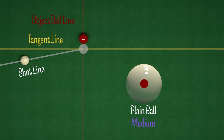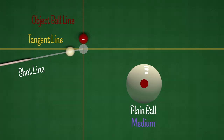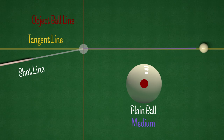The other thing that affects this is the angle of the cut. If we play this as a very thin cut, the influence of the spin is minimal. This is because the cue ball is already traveling in almost the same direction as the spin, and because the cut is thin, the impact hardly slows down the cue ball at all.